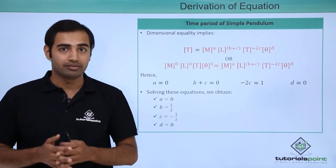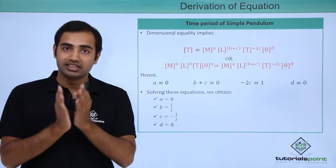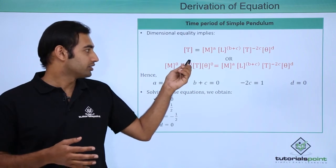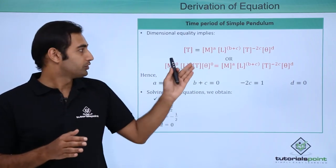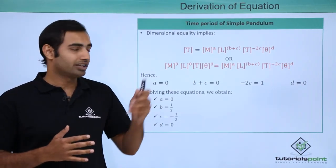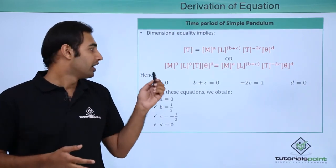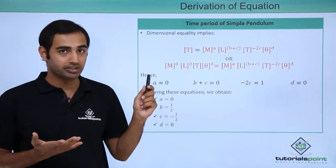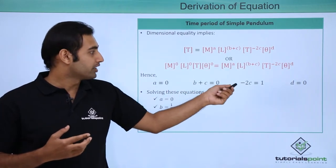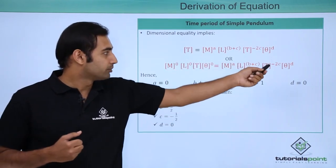Now I will equate the dimensions of LHS and RHS. Many terms of the RHS are not present in the LHS. So I have written M raised to power 0, L raised to power 0, and theta raised to power 0 to introduce the terms which are absent on the LHS, while at the same time maintaining the integrity of the equation, because any quantity raised to power 0 is simply 1. Now I will simply compare the exponents: a is equal to 0 because the exponent of M must be equal on each side; b plus c is equal to 0 because the exponent of L must be equal; minus 2c is equal to 1 because the exponents of time dimension must also be equal.